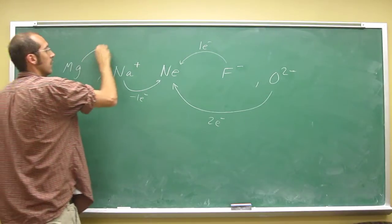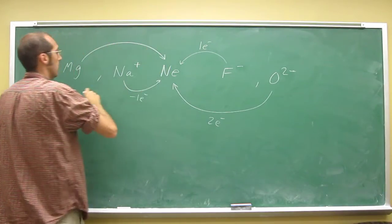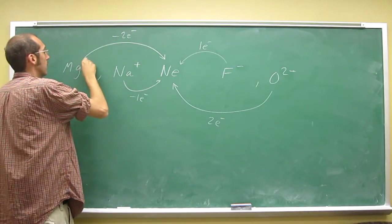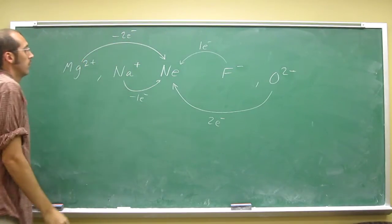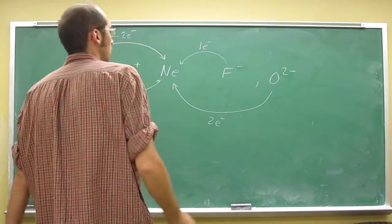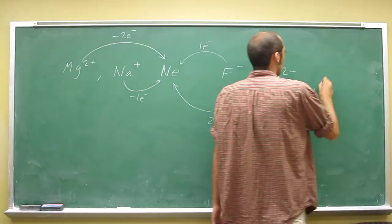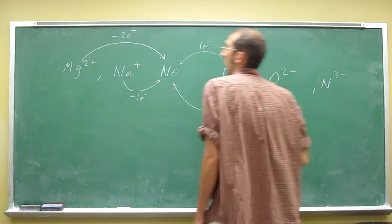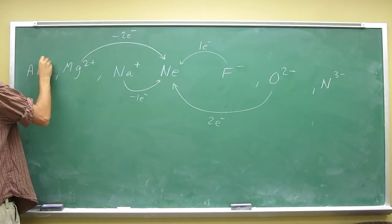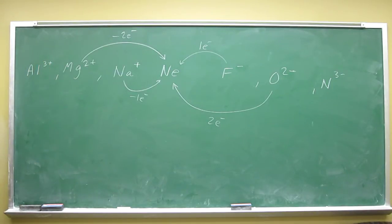And magnesium needs to lose two electrons to attain the neon configuration plus two. I mean, there's others, in fact, you could do N3-, you could do Al3+, we'll stop that.